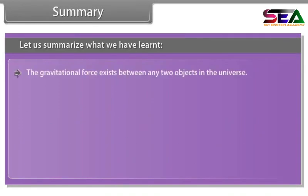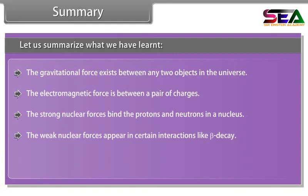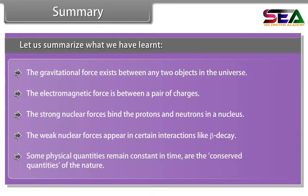The gravitational force exists between any two objects in the universe. The electromagnetic force is between a pair of charges. The strong nuclear forces bind the protons and neutrons in a nucleus. The weak nuclear forces appear in certain interactions like beta decay. Some physical quantities remain constant in time and are the conserved quantities of nature.